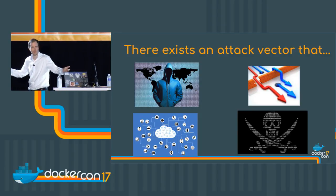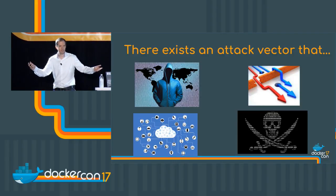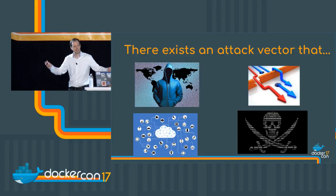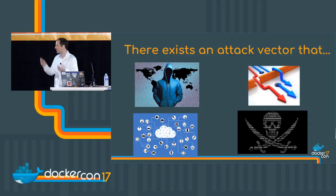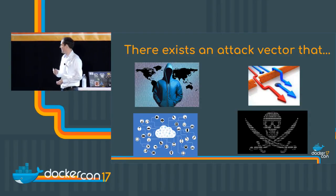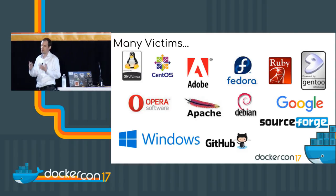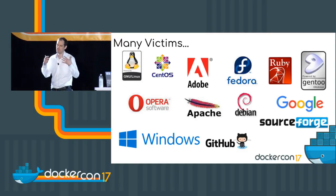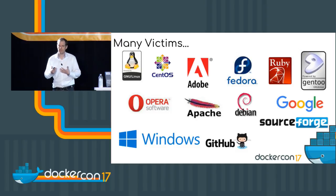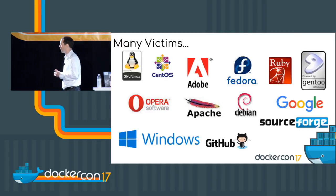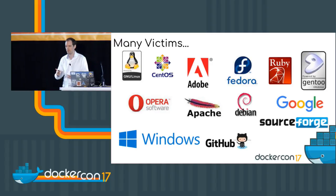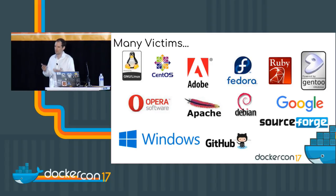Does anyone want to raise their hand and throw out a suggestion as to what this attack vector might be? Software updates — great. This is about software updates. Software updates are an attack vector that have had many victims. Companies have had people break into their infrastructure and exploit weaknesses in how they do updates, putting users of major software at risk.